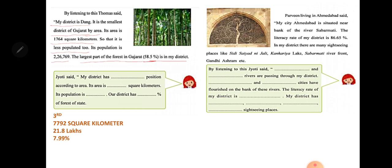Praveen from Ahmedabad said: my district is situated near the bank of the river Sabarmati. The literacy rate of my district is 86.65 percent. There are many sightseeing places in my district like Sidi Sayyad Jaali, Kankaria Lake, Sabarmati Riverfront, and Gandhi Ashram.